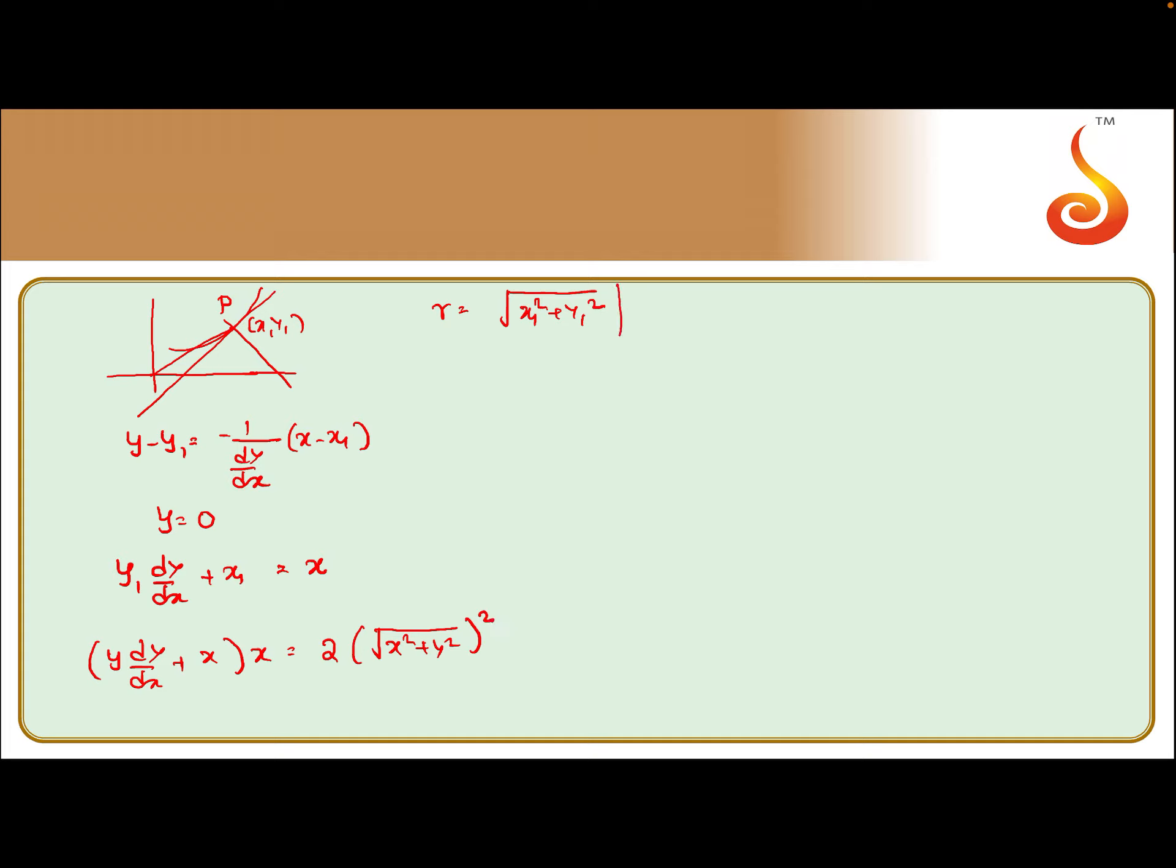So what we get from this: dy/dx = (2y² + x²)/(xy). Again, y = vx, so dy/dx = v + x(dv/dx). We substitute: v + x(dv/dx) = (2v² + 1)/v. So x(dv/dx), if we take v to that side, we get (v² + 1)/v.